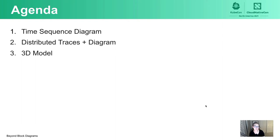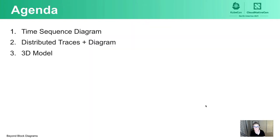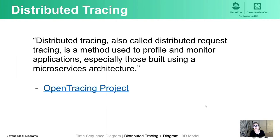So that's one alternative way of visualizing Kubernetes: through a time sequence diagram, where we get a sense of what events are happening to create that pod. Let's go on to our second way of visualizing Kubernetes, which is a combination of distributed traces and diagrams. Distributed tracing is sometimes also called distributed request tracing, and it's a method to profile and monitor applications, especially microservice applications. The CNCF has the OpenTracing and OpenTelemetry projects that create standards for how tools that do this are built.